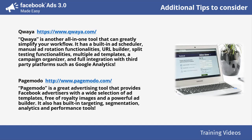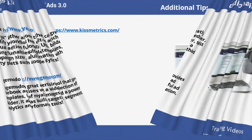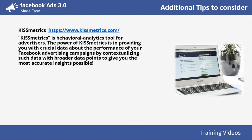Kissmetrics is a behavioral analytics tool for advertisers. The power of Kissmetrics is in providing you with crucial data about the performance of your Facebook advertising campaigns by contextualizing such data with broader data points to give you the most accurate insights possible.